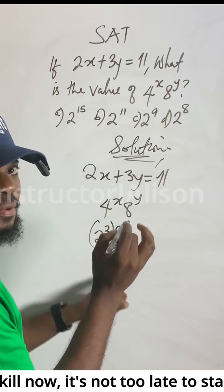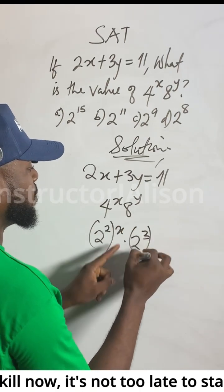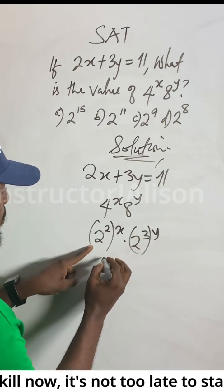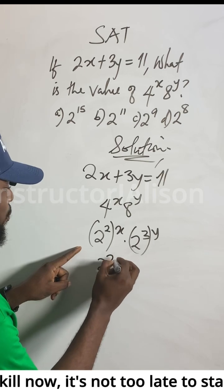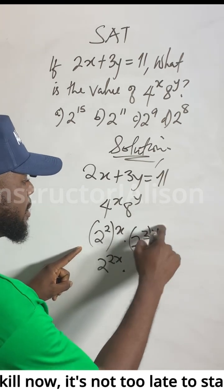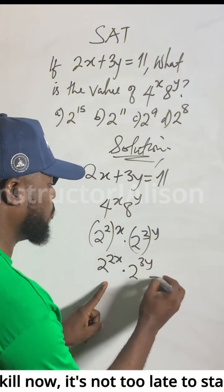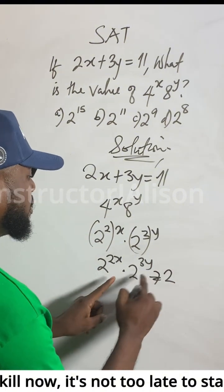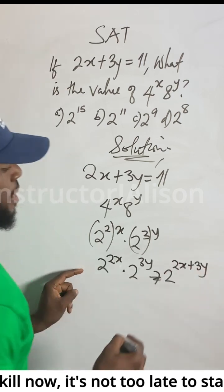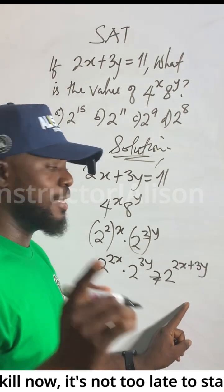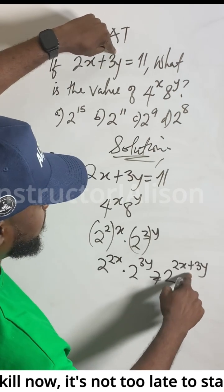Remember, 2 to the power of 2 gives me 4, and 2 to the power of 3 gives me 8. So anytime the bases are the same, two times x gives us 2x, and three times y gives us 3y. Anytime the bases are the same, you take the common base and add the powers: 2x plus 3y.